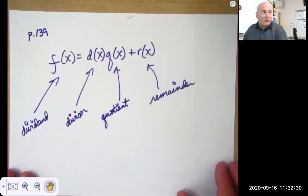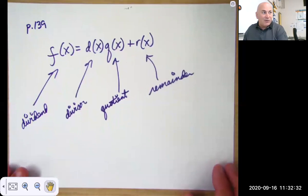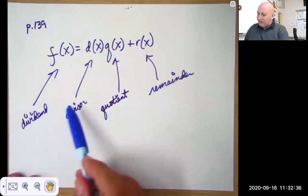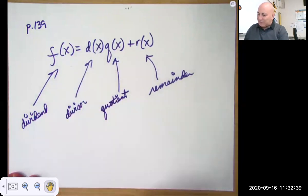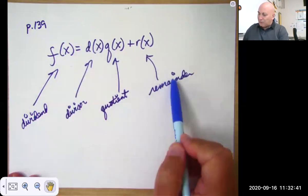Because on page 139 of your text, they tell you that if you're dividing two polynomials, you're going to have a dividend and a divisor. So f of x divided by d of x is going to give you a quotient and a remainder.